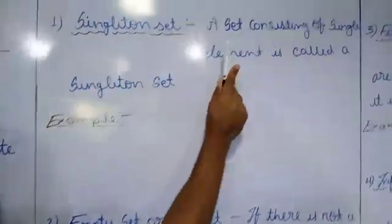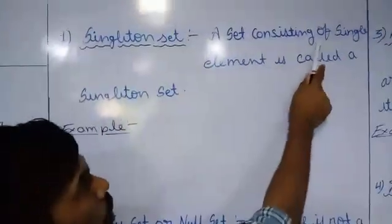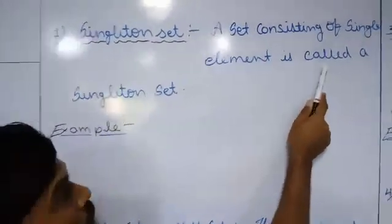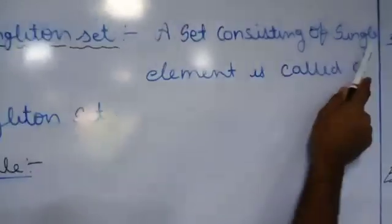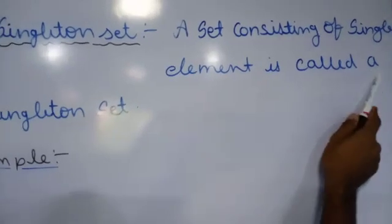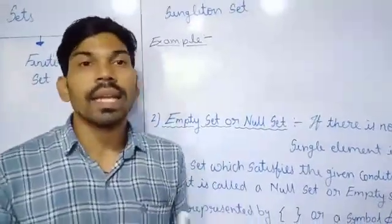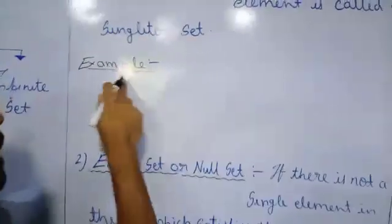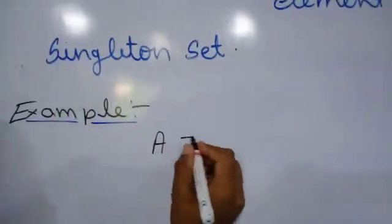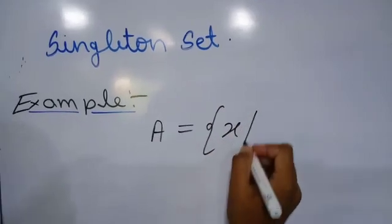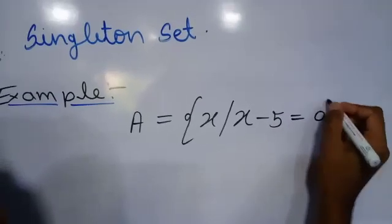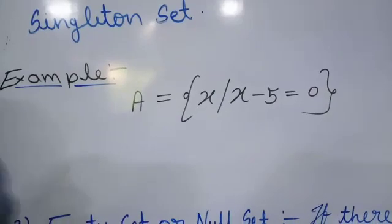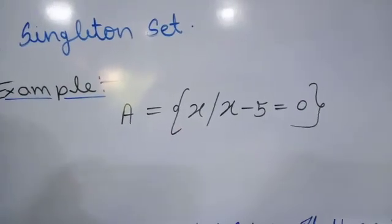Singleton set: a set consisting of a single element is called a singleton set. If we have a group of elements in a set and there is only one element, that is called a singleton set. For example, set A is equal to {x such that x minus 5 is equal to 0}. This is given in the rule method — we need to find how there is only one element.